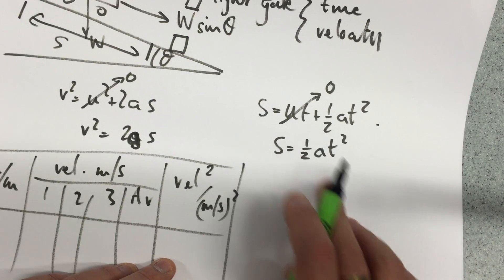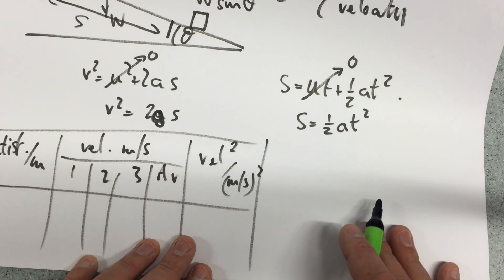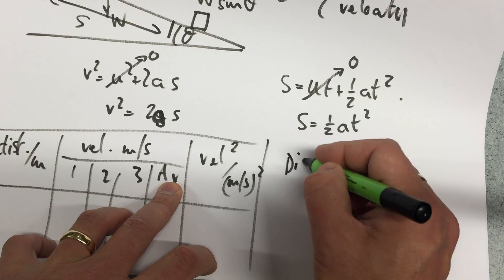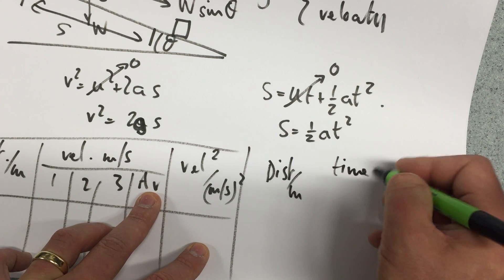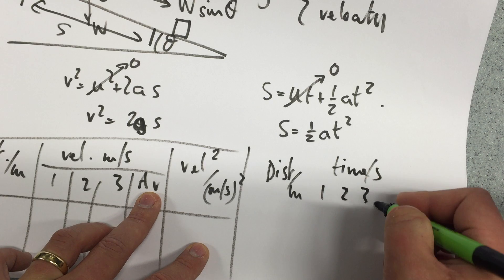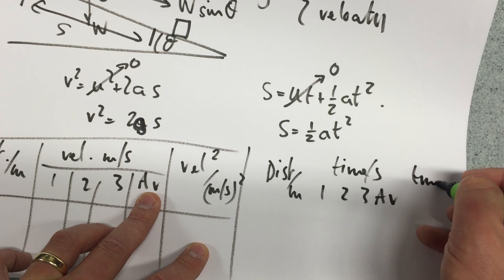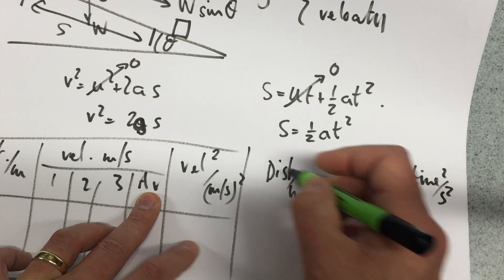However if I was going to use this kinematic equation I could work out the distance again, the time once twice three times an average and then the time squared in seconds squared.